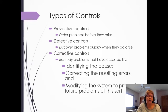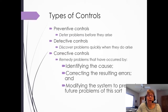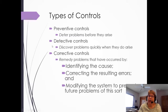The last type is corrective controls. These are ways to identify the cause — what happened and why did this error occur — then correcting it in the short term, and making sure your controls are updated so it doesn't happen again.